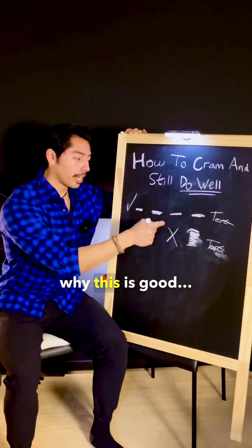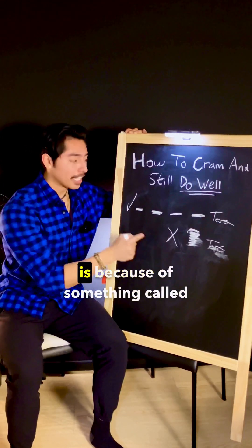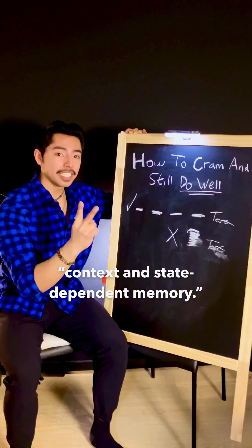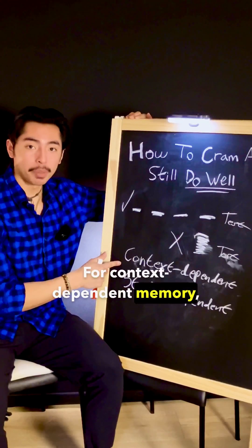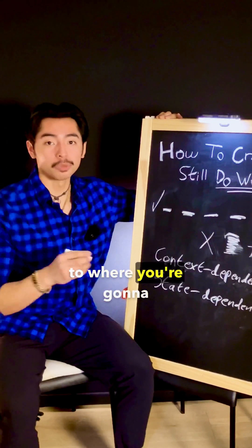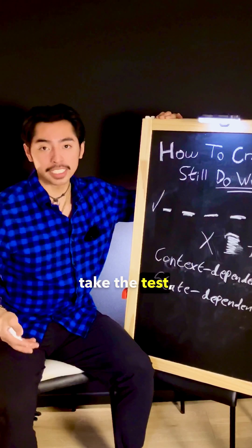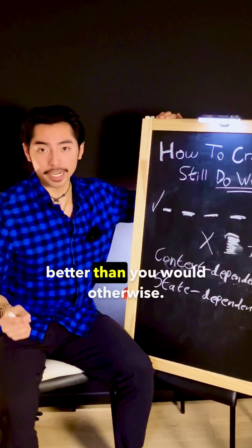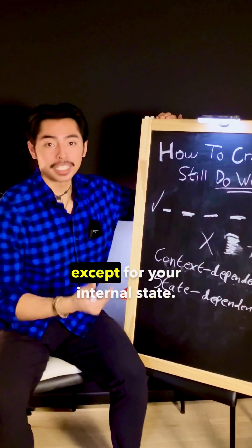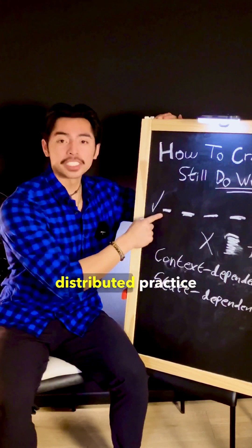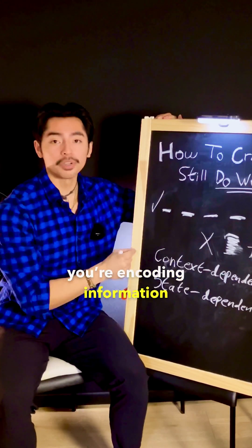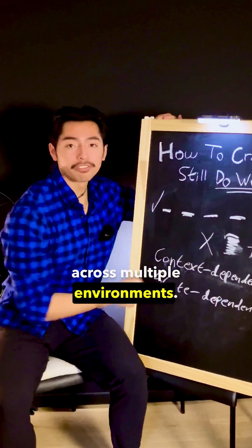The real reason why this is good and this is bad is because of something called context and state-dependent memory. For context-dependent memory, if you're learning the information in a similar environment to where you're going to take the test, you'll remember the information better than you would otherwise. State-dependent memory works the same way except for your internal states. And the reason that distributed practice is so much better is because you're encoding information across multiple environments.